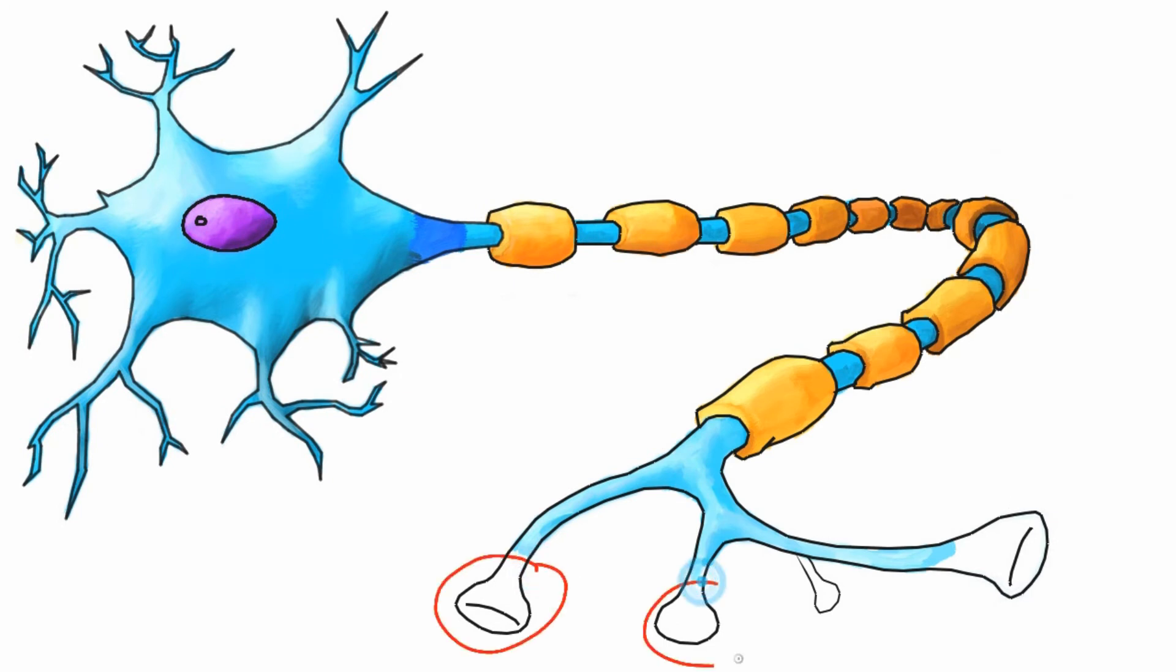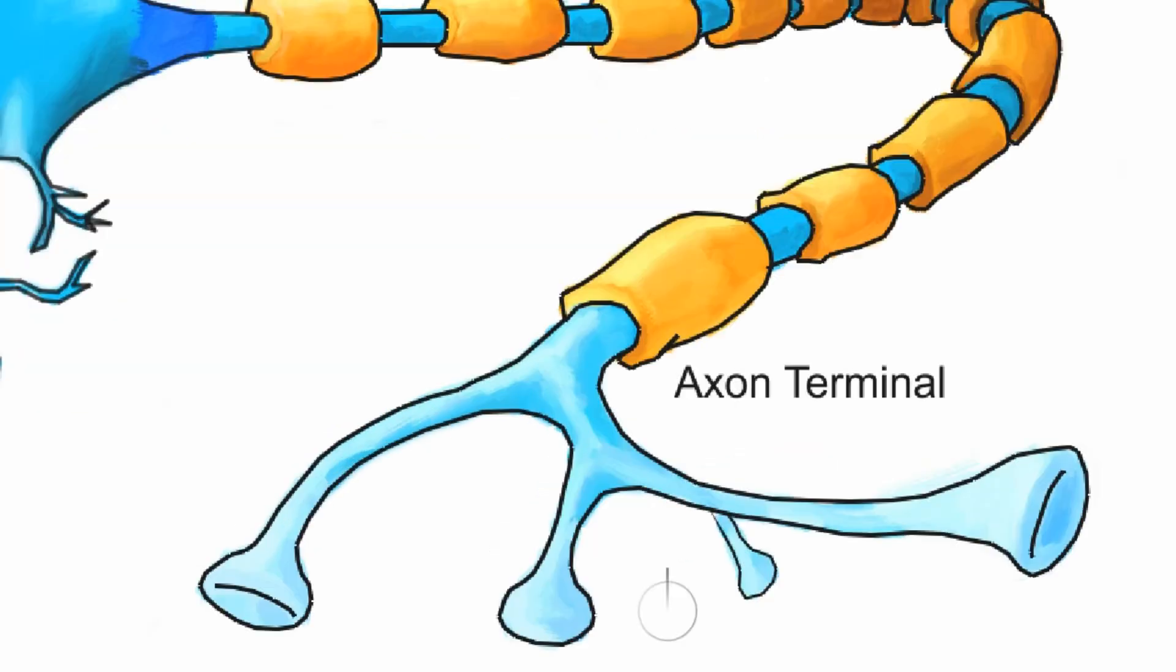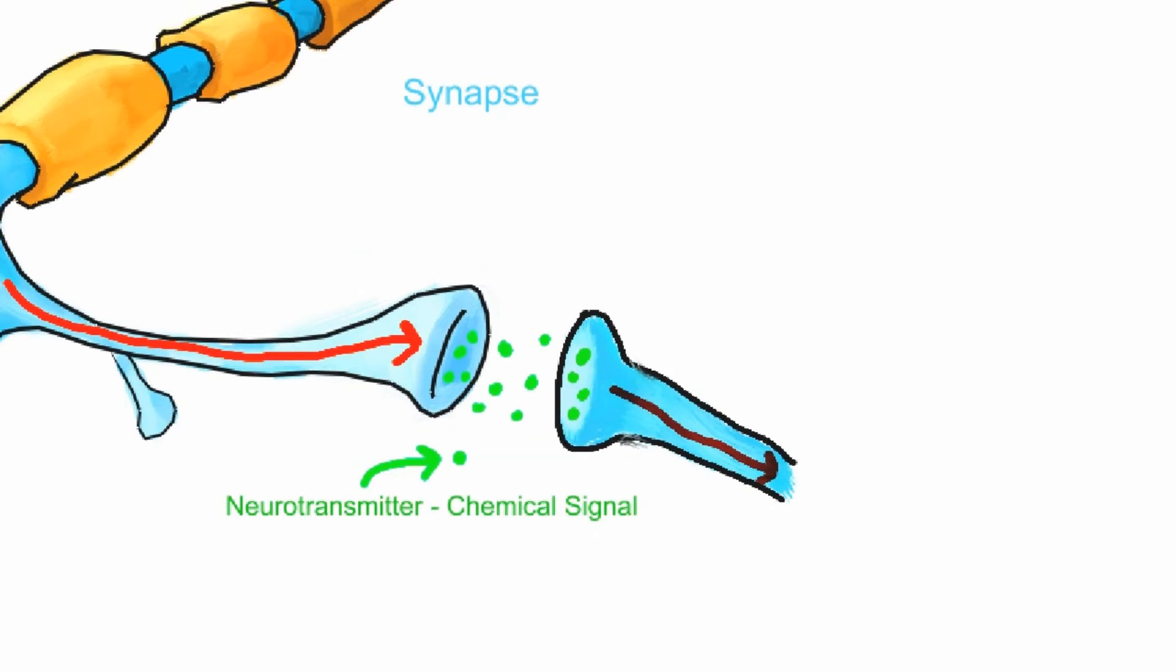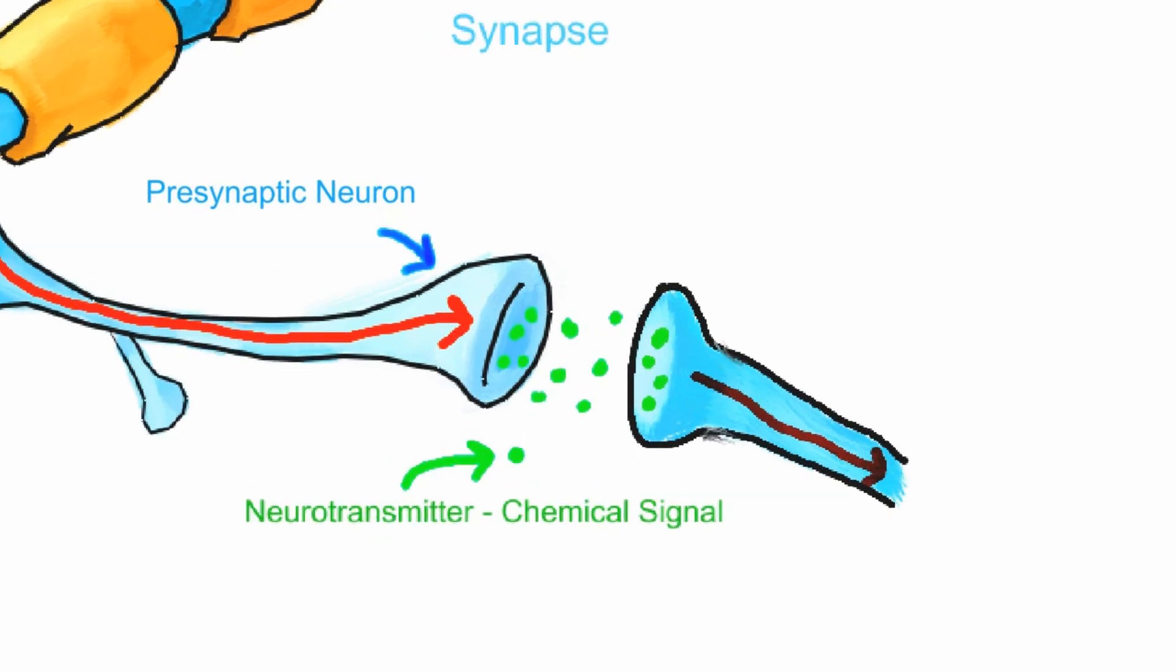Anyway, as we get closer to the end of the neuron, we call this end piece the axon terminal. Let's zoom in on one of these parts. It is here where the action potential reaches and triggers the release of chemical signals called neurotransmitters. Upon release, the neurotransmitters attach onto the target neuron, which then activates another signal. Now this junction area is called the synapse. The cell transmitting the signal is the presynaptic neuron, and the receiving cell is the postsynaptic neuron. This gap between the cells is the synaptic cleft.